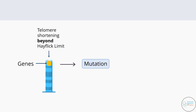Accumulation of mutations may cause neoplasia — the uncontrolled abnormal growth of cells or tissues in the body that manifests in the form of tumors that may be benign or malignant. Malignant tumors are cancerous and can cause metastasis, spreading to other sites through the bloodstream or lymphatic system. Therefore, telomeres should not get shortened beyond the Hayflick limit.